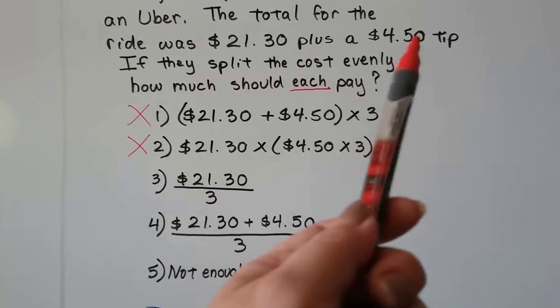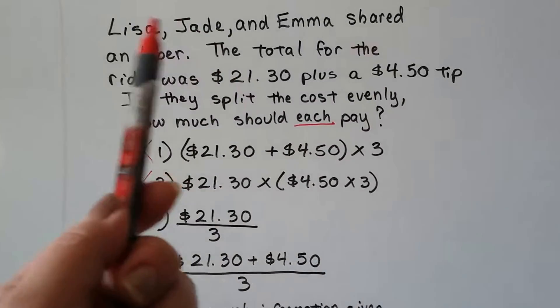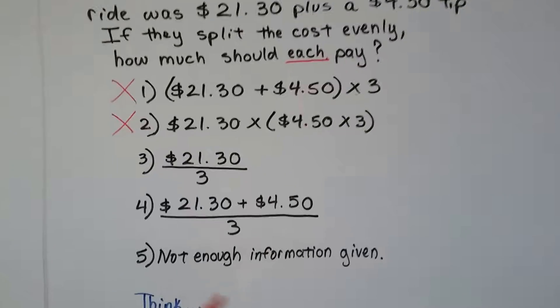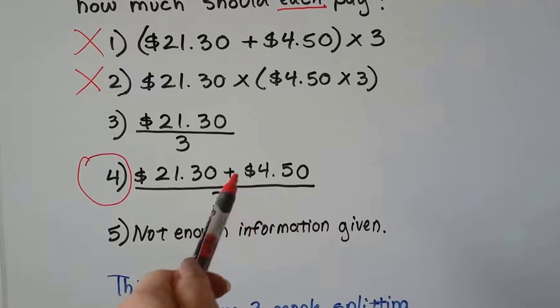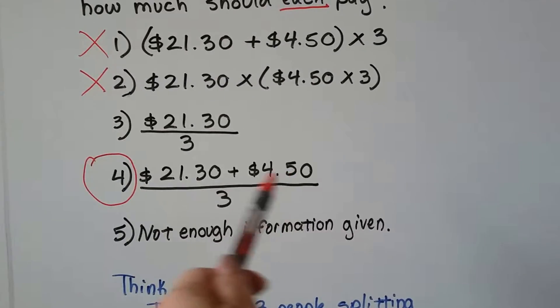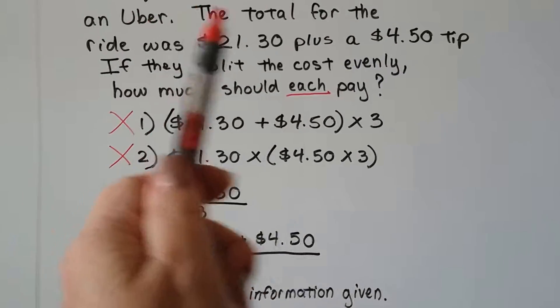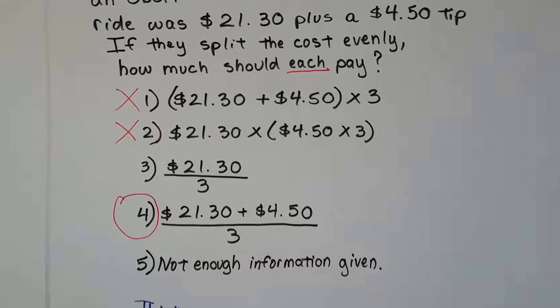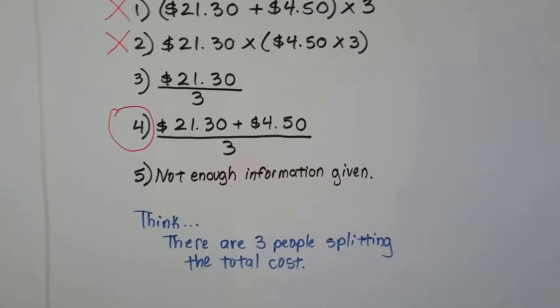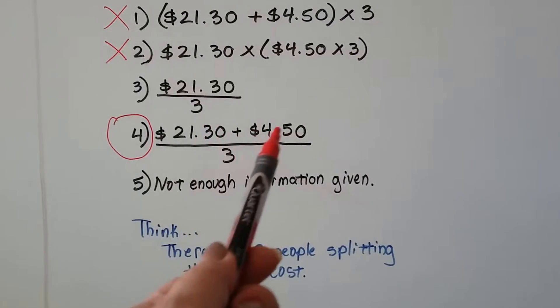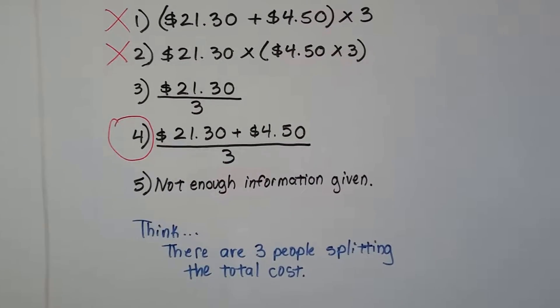So anything that would have these two amounts added together and then split for each of them, and there's one, two, three people, would be the correct one. So if you said this one, you're right. You add the $21.30 plus the tip of $4.50, and whatever that total is, we would divide it by three because there's three of them. One, two, three, and that's how much each would pay. There's three people splitting the total cost. We're going to divide it by three. But see, we have to remember to add the ride plus the tip together before we divide it by three so they split the tip also.